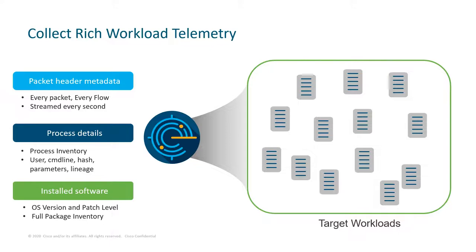Alongside the process serving network traffic, it's also critical to understand the posture of that machine — basic housekeeping: what is the OS version, what patches are applied, what software is installed, is that software up to date? All of this information is critical to building a behavioral profile of an application workload. Whether workloads are on-prem, in the cloud, bare metal servers, virtual machines, or containers, it's all going to be streamed up to Tetration in the same fashion, giving complete visibility.